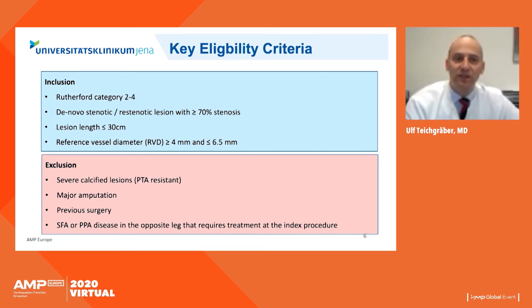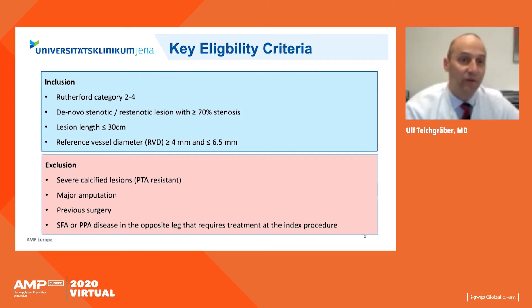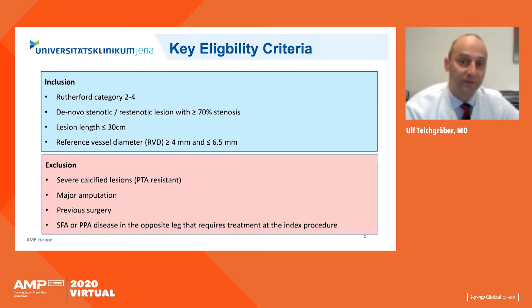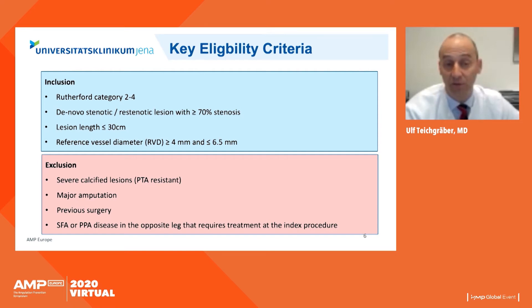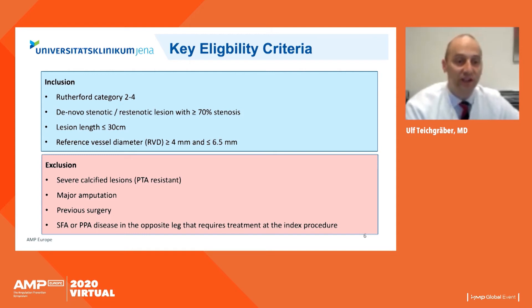Eligibility criteria: inclusion criteria are Rutherford category two to four, focusing mainly on de novo stenotic lesions — though restenotic lesions with at least 70% stenosis are also allowed. Lesion lengths range from a minimum of 5 centimeters up to 30 centimeters, including long lesions. The only exclusion criteria are heavily calcified lesions and major amputation.